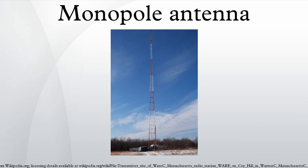Monopole broadcasting antennas: When used for radio broadcasting, the radio frequency power from the broadcasting transmitter is fed across the base insulator between the tower and a ground system. The ideal ground system for AM broadcasters comprises at least 120 buried copper or phosphor bronze radio wires at least one quarter wavelength long and a ground screen in the immediate vicinity of the tower. All the ground system components are bonded together, usually by welding, brazing, or using coin-silver solder to help reduce corrosion.